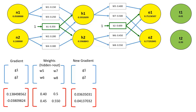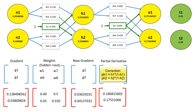In the same way that we calculated the partial derivative for the output layer, we do the same again for the hidden layer. This time, of course, we're taking the partial derivative of neurons H1 and H2, rather than output neurons O1 and O2.